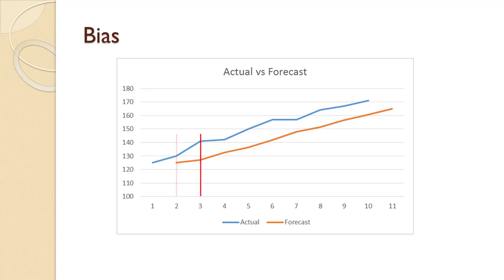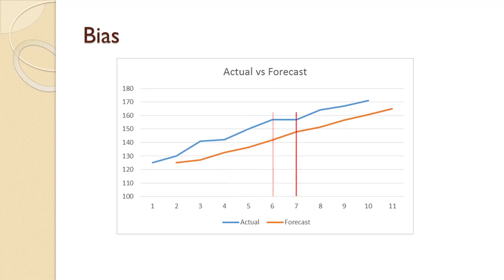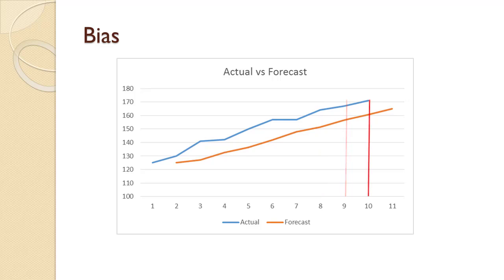Periods 2, 3, 4, 5, 6, 7, 8, 9, and 10 are all such that the forecast is below demand.